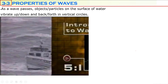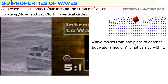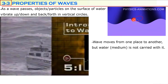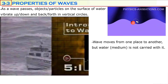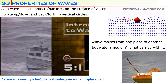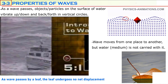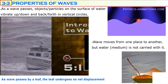As a wave passes, objects or particles on the surface of the water vibrate up and down and back and forth in vertical circles. Assume there is a ball on the surface of water — as the wave travels, the object moves in a circular path, up and down, back and forth, but this object has no net displacement. Similarly, assume there is a leaf on the surface of water. As the wave passes by the leaf, the leaf undergoes no net displacement — it moves up and down or back and forth but stays where it is.